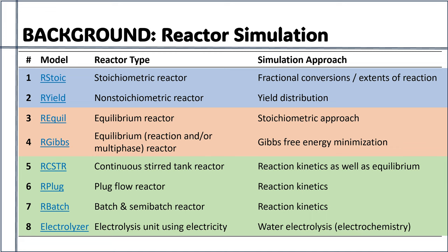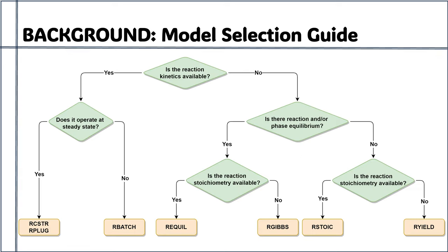So how would you decide which reactor model is most appropriate for your simulation study? While selecting any of the available reactor models, the first information you need to know is whether reaction kinetics are available or not. If reaction kinetics are available, you have the option to choose either a steady-state reactor — RCSTR or R-plug — or the unsteady-state reactor R-batch. If no kinetic information is available, you need to decide whether the reaction approaches equilibrium or not. In case of equilibrium, you choose between equilibrium reactor and Gibbs reactor. The equilibrium reactor is selected when stoichiometry is available; if stoichiometry is not well known, proceed to the Gibbs reactor.